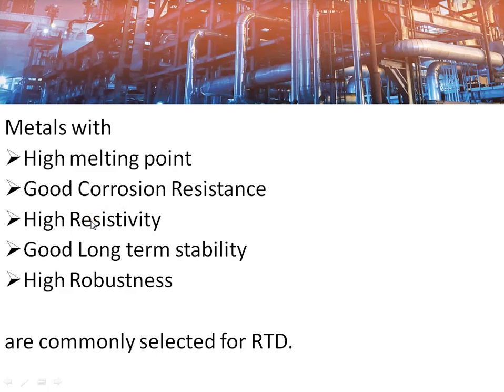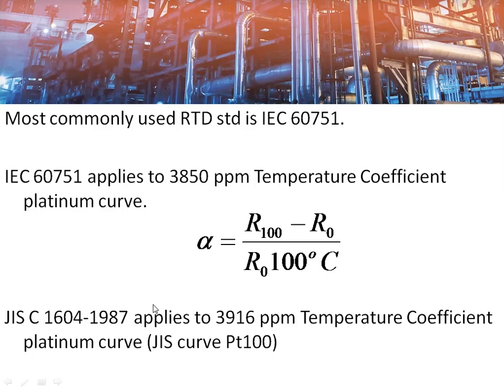The metals used have properties like high melting point, good corrosion resistance, high resistivity, good long-term stability, and high robustness. These properties are required for the construction of RTDs. The commonly used metals are platinum, nickel, and copper.